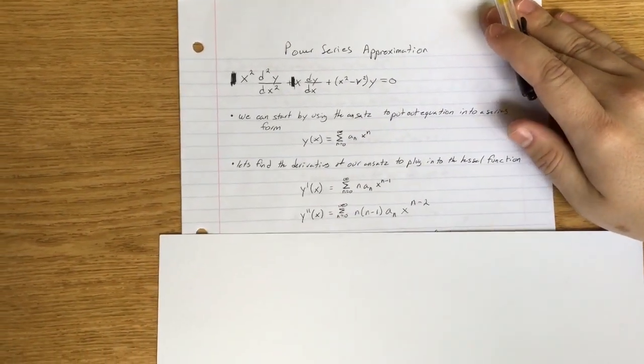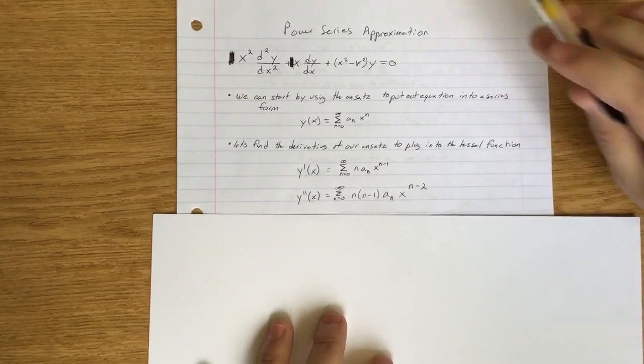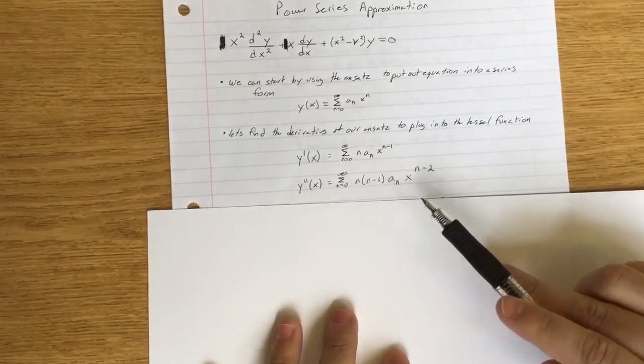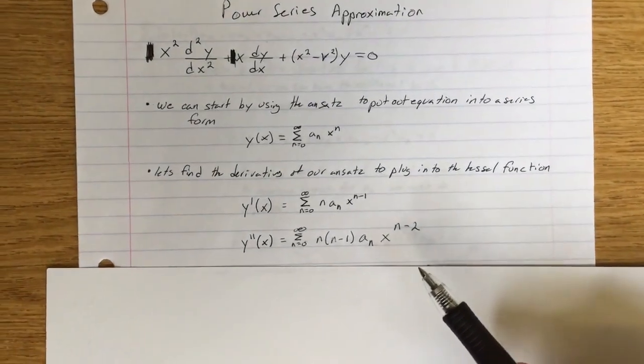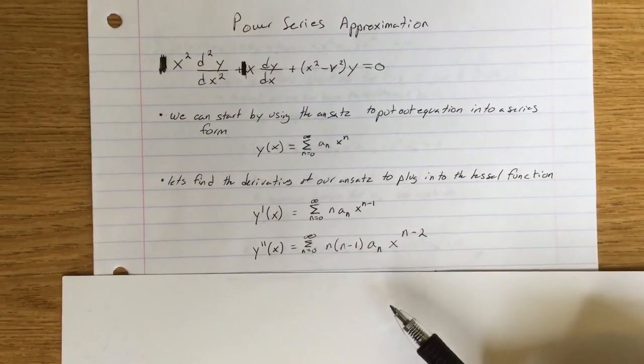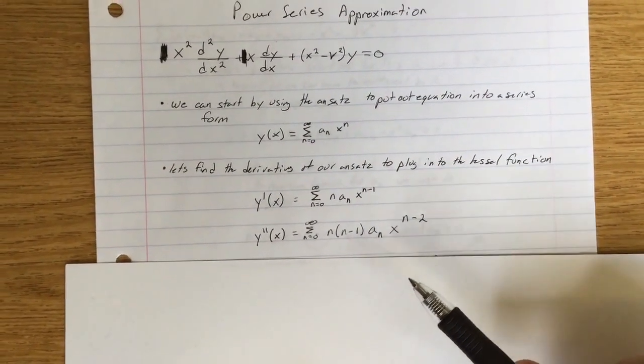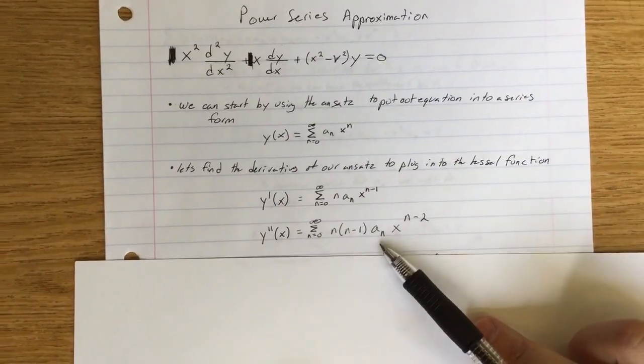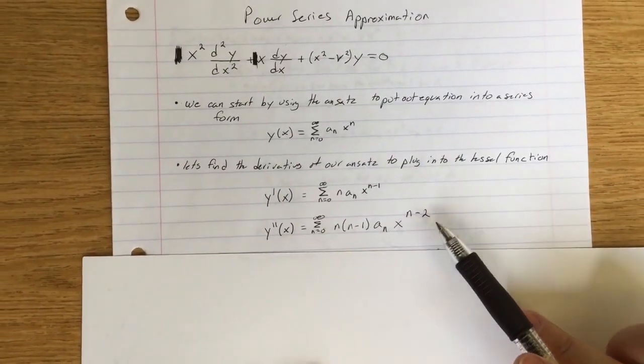Doing simple derivatives of that, we find that y' equals n times a_n times x to the n minus 1. For y'', we find that it's the sum of n times (n minus 1) a_n times x to the n minus 2.